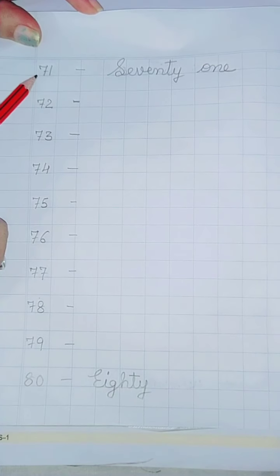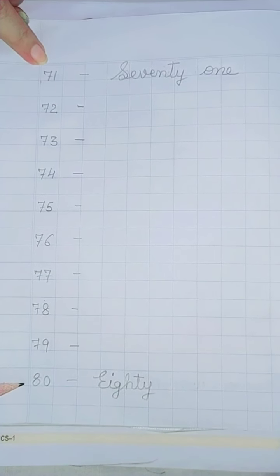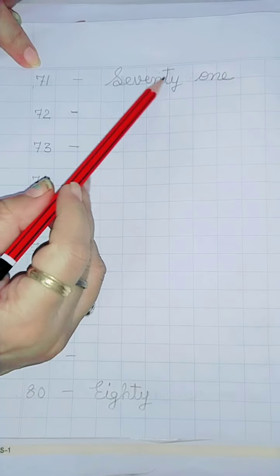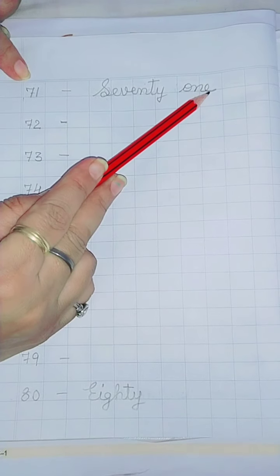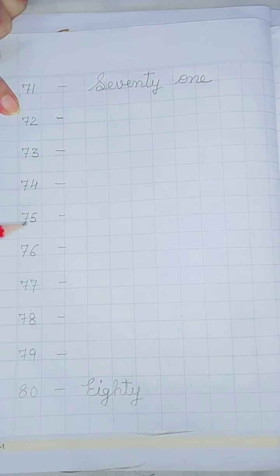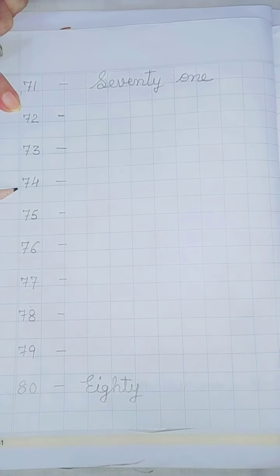New page. Write from 71 to 80 numbers. Spelling of 71, S-E-V-E-N-T-Y-70-O-N-E-71. Now write the spellings of 72, 73, 74, 75.